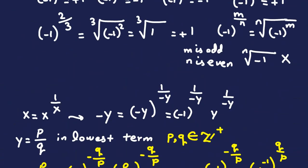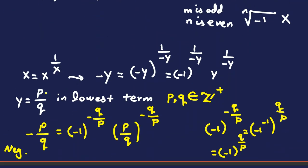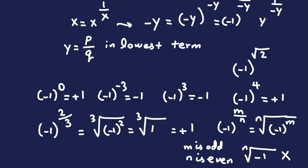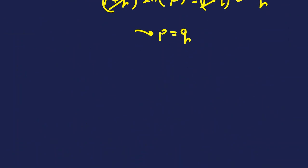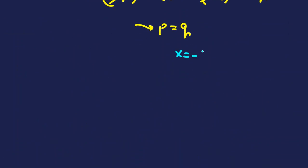Since p = q, we get y = p/q = 1. And since x = −y, we conclude x = −1. So the two solutions to the equation are x = 1 and x = −1.